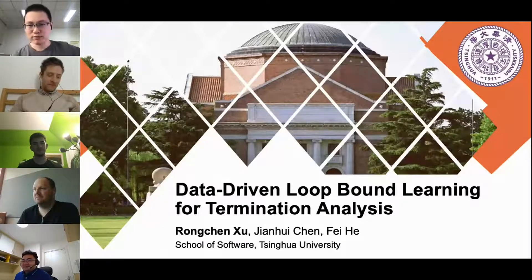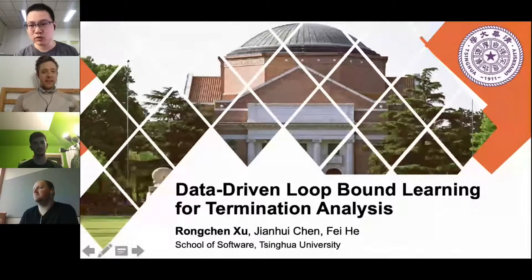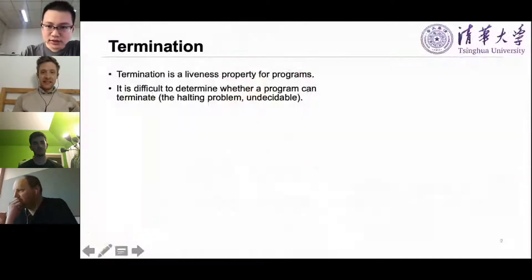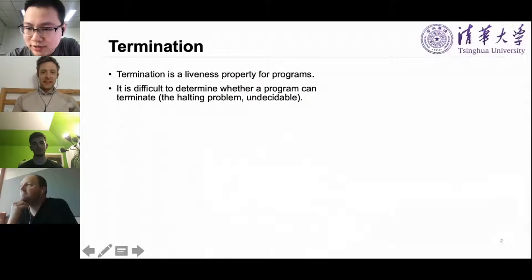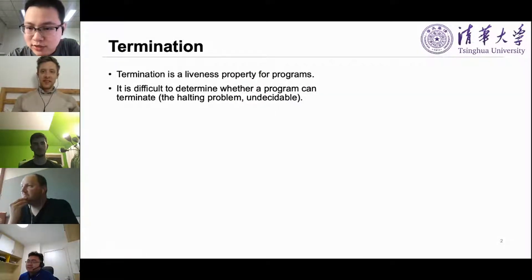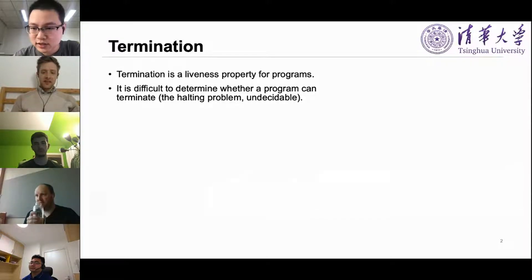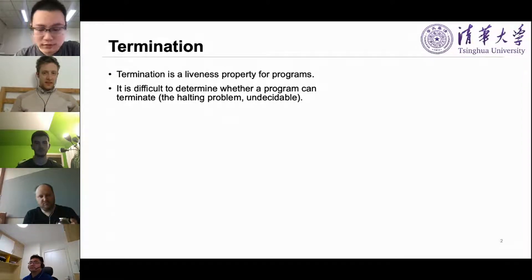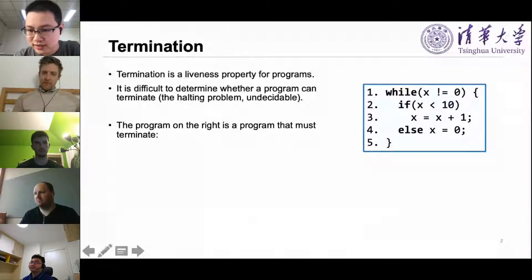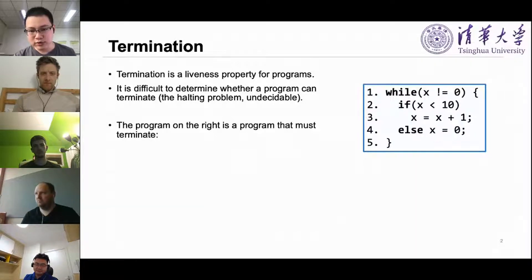Hello everybody, I'm Rong Chen from Tsinghua University. I'm glad to show our recent work on program termination analysis. Termination is a crucial liveness property for a program. A lot of work has been devoted to termination analysis, but it remains challenging. In recent work we attempt to integrate data-driven approaches with termination analysis. Consider a program with a single loop where variable x keeps increasing when it is less than 10, otherwise it resets to zero. The program always terminates, but how can we strictly prove it?